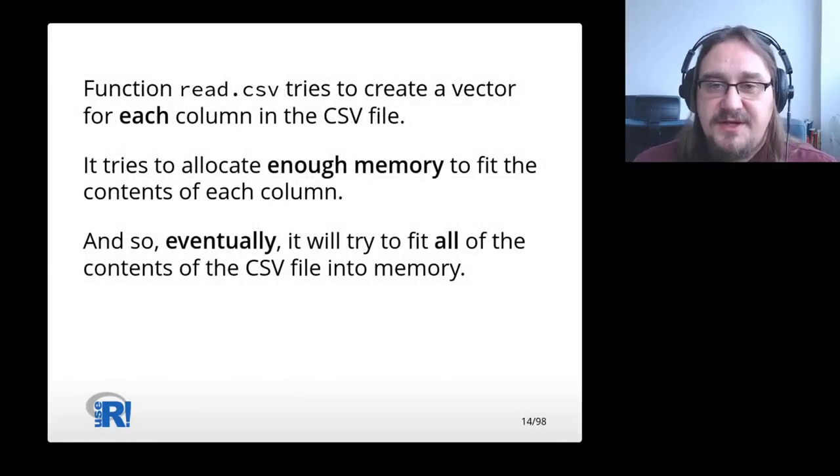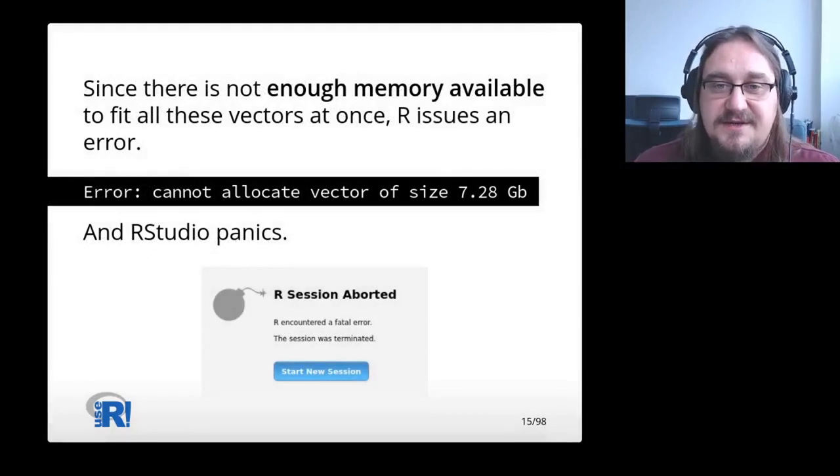Function read.csv tries to create a vector for each column in the CSV file. It tries to allocate enough memory to fit the contents of each column. And so eventually, it will try to fit all of the contents of the CSV into memory. Since there is not enough memory available to fit all these vectors at once, R issues an error. And RStudio panics.